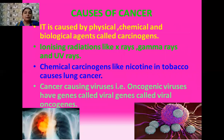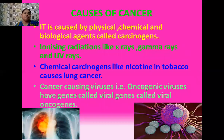Now I am going to discuss the various causes of cancer. Cancer-causing agents are known as carcinogens. They may be physical, chemical, or biological. Among the physical agents there are various types of ionizing radiations like X-rays, gamma rays, and ultraviolet radiation.